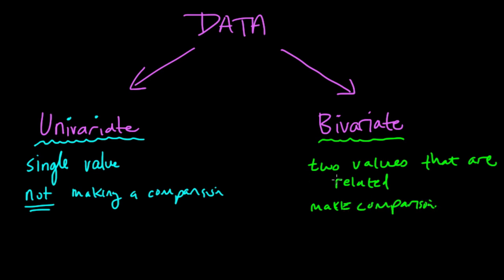And frequently what you'll hear with bivariate data is the terms independent and dependent variables. That's describing the two values or variables that you're looking at. So really, I guess I should say that bivariate data looks at two variables, whereas univariate data looks at single variables.